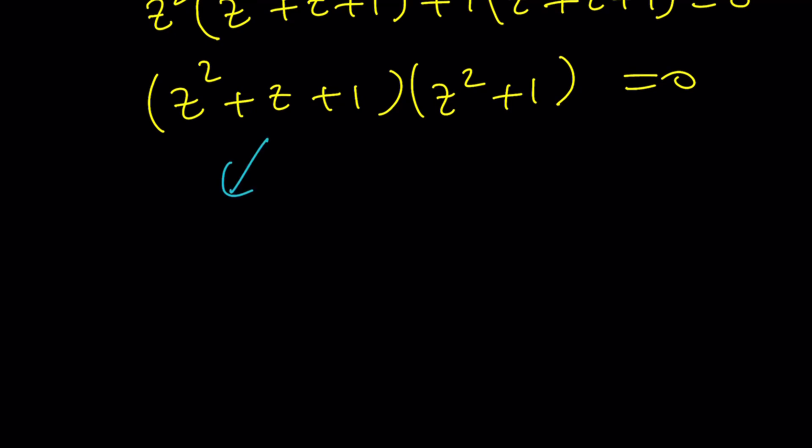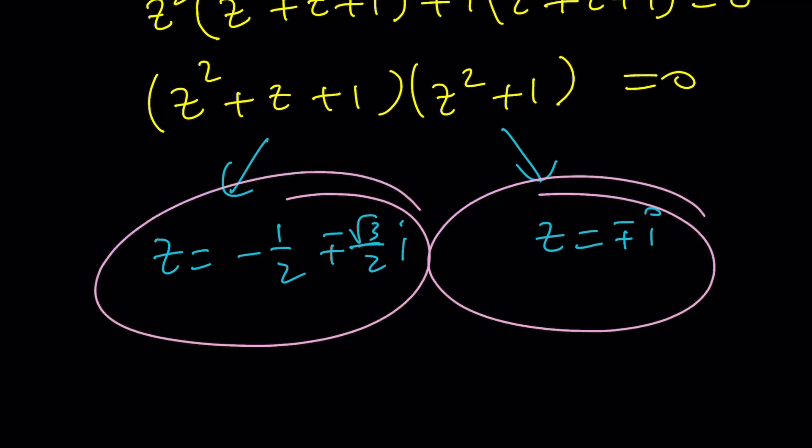From here, we get z = -1/2 ± √3/2. I remember these are the cube roots of 1. And from here, we're going to get z = ±i. And that gives us a total of 4 solutions because this is a quartic.